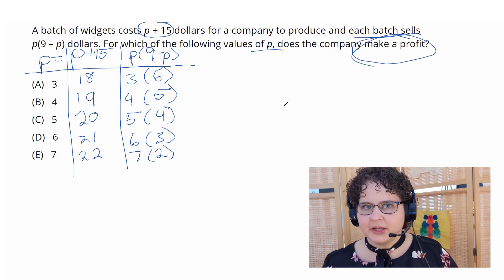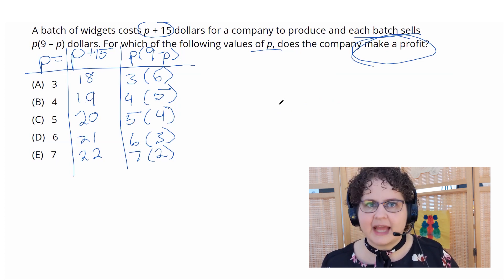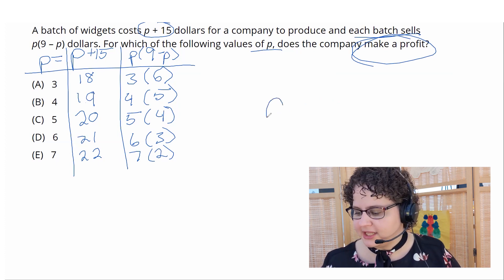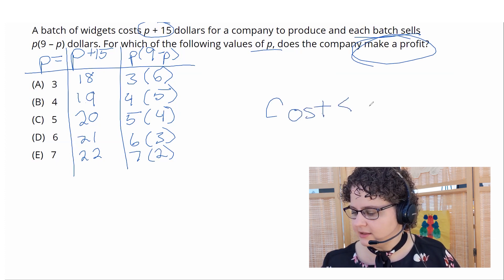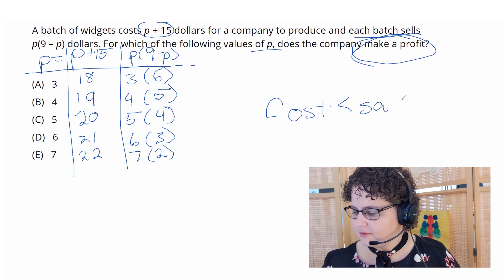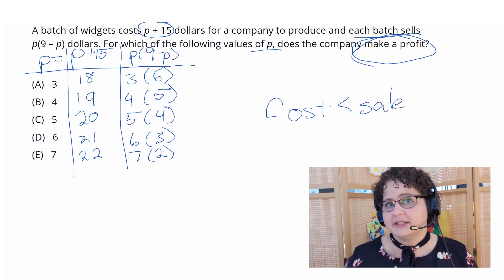how do you make a profit? You make a profit when your costs are less than your income, or in this case, your sale price. So if your cost less than sale, that's our right answer.